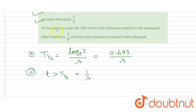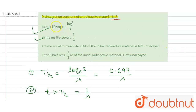The third option states that at time equal to the mean life, 63% of the initial radioactive material is left undecayed. However, no specific material is given in the question, so we cannot confirm that at time equal to the mean life, 63% of the initial radioactive material is left undecayed. Therefore this option is incorrect.